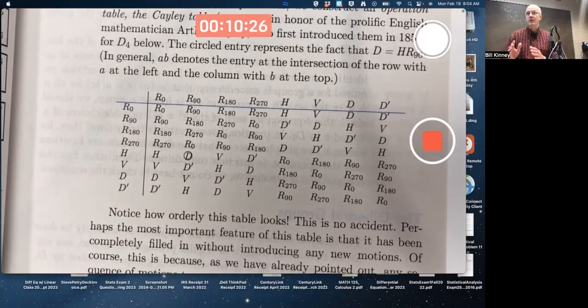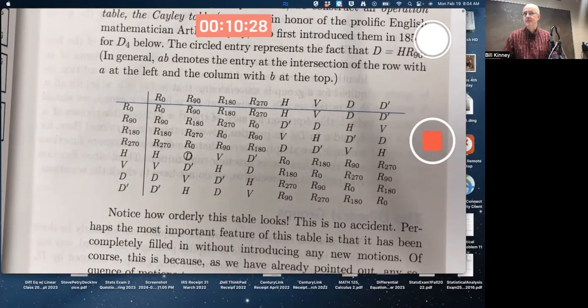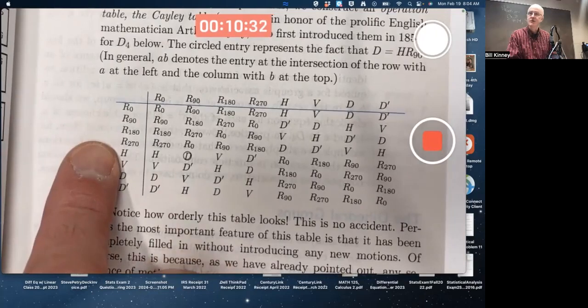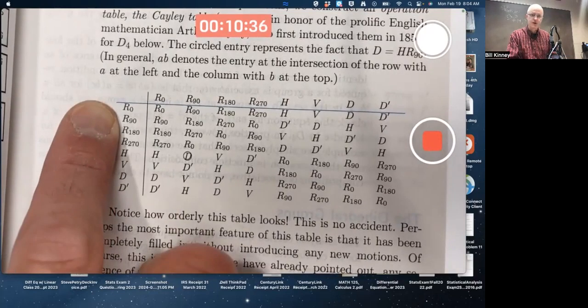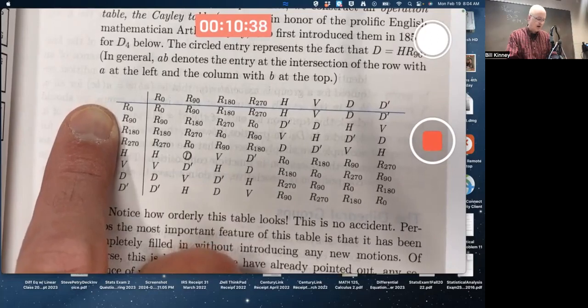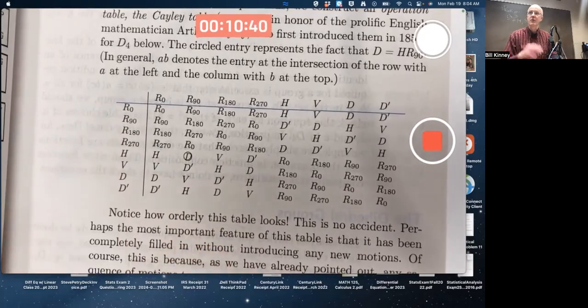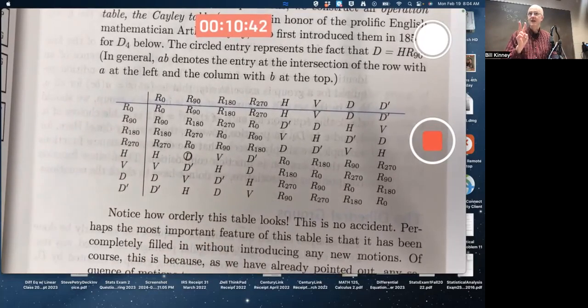However, any other subgroup of order 4 can't possibly be cyclic. Because R90 and R270 are the only elements of order 4. So R0 has order 1, that's the identity, R180, and then all the flips have order 2. They're not going to generate cyclic subgroups of order 4.